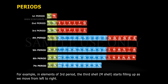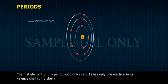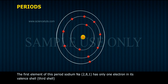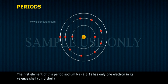For example, in elements of the third period, the third shell — the M-shell — starts filling up as we move from left to right. The first element of this period, sodium, Na-2-8-1, has only one electron in its valence shell, the third shell.